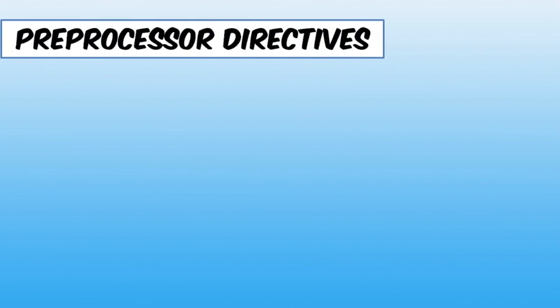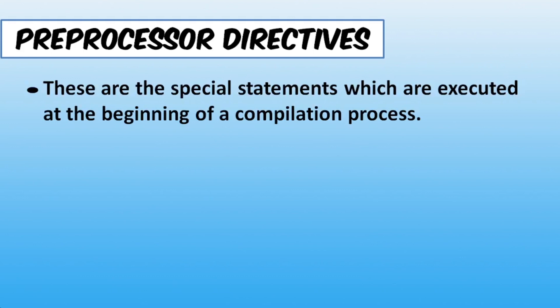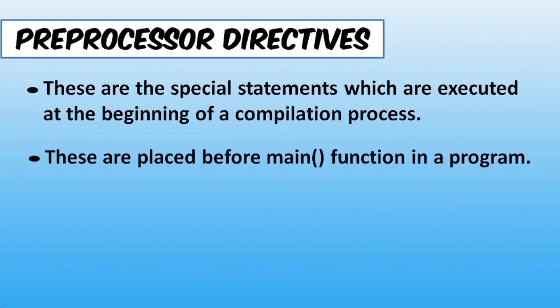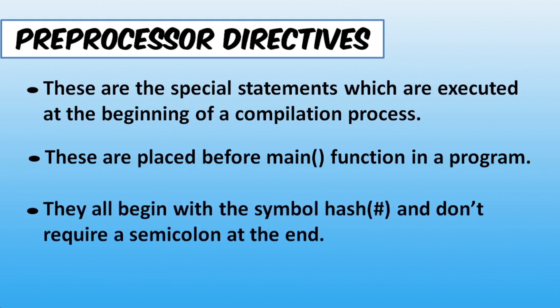So let's come up with preprocessor directives. Preprocessor directives are the special statements which are executed at the beginning of a compilation process. These are placed before the main function in a program. All preprocessor directives begin with a hash symbol and don't require a semicolon at the end. What we used to do in every program — linking the library file using hash include stdio.h — that is a preprocessor directive.